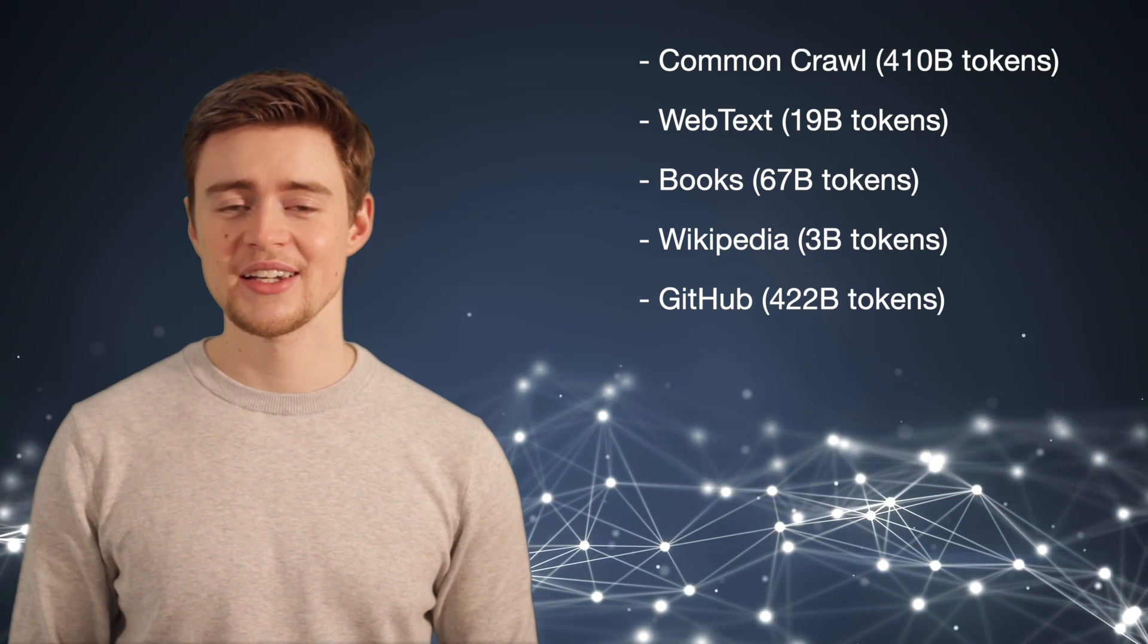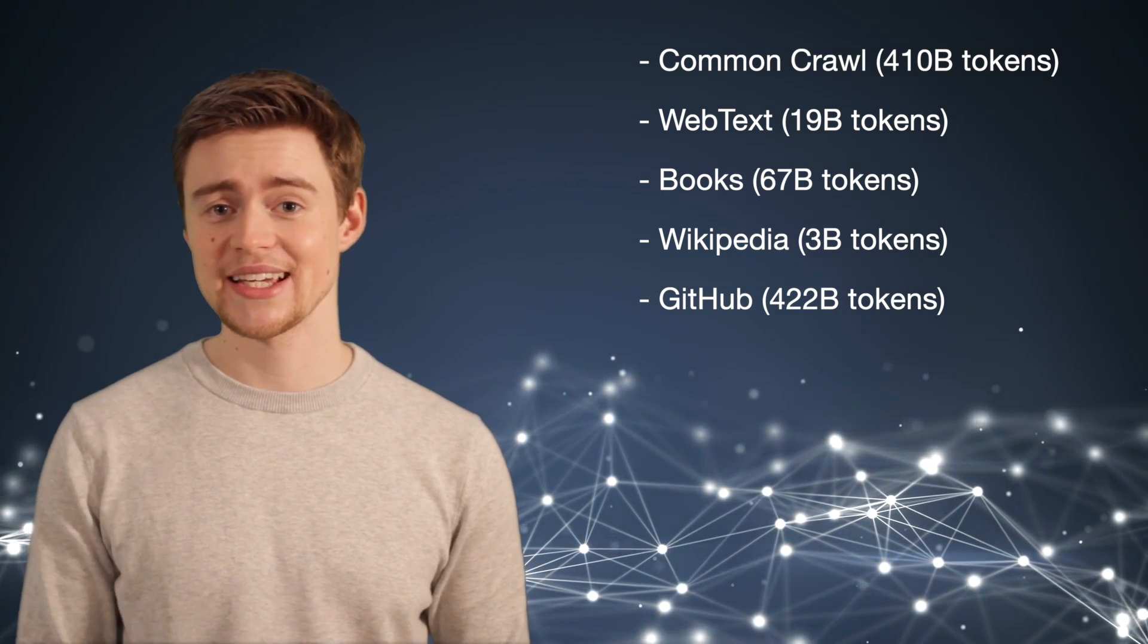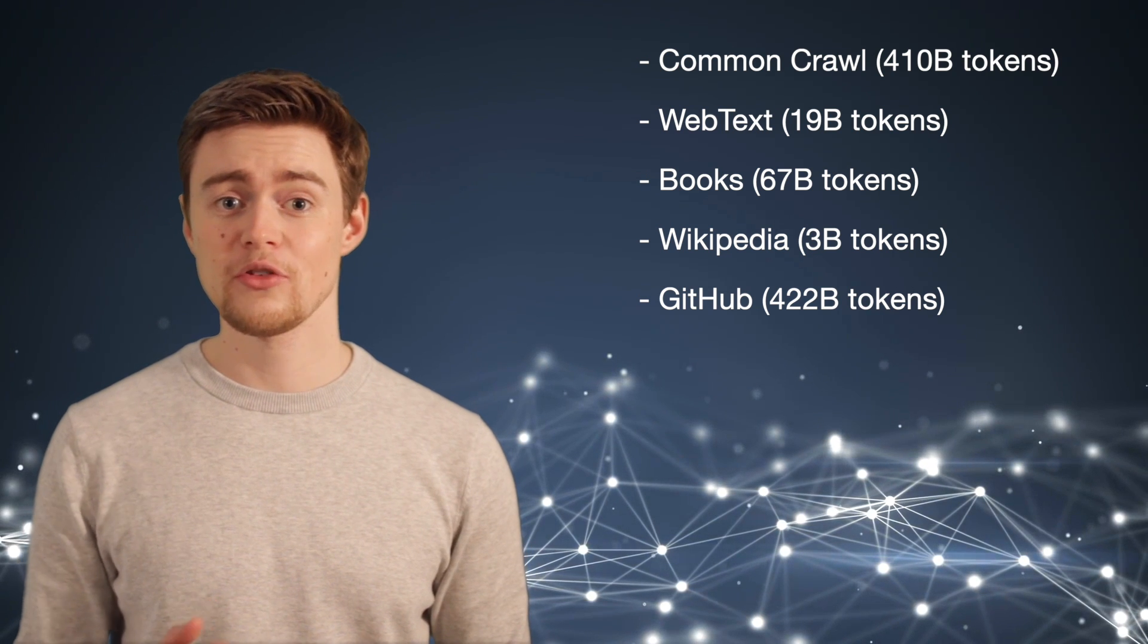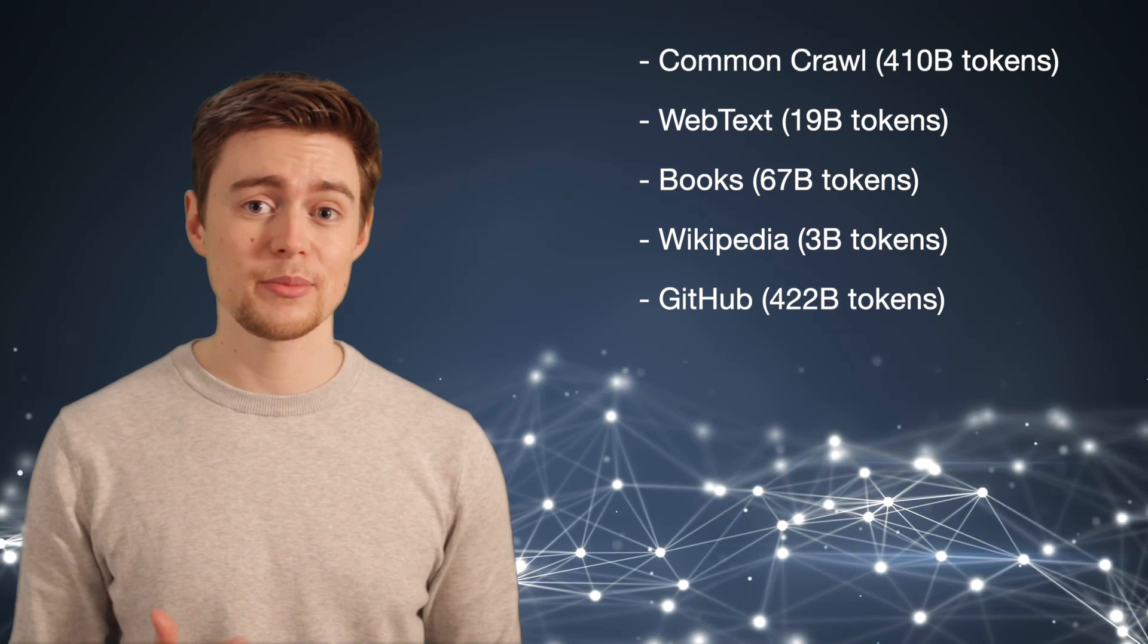Next, there is GitHub. Because of OpenAI's collaboration with Microsoft, which owns GitHub, they can access quite a lot of data. For example, in the Gopher paper, DeepMind reported that their GitHub dataset has over 400 billion tokens.